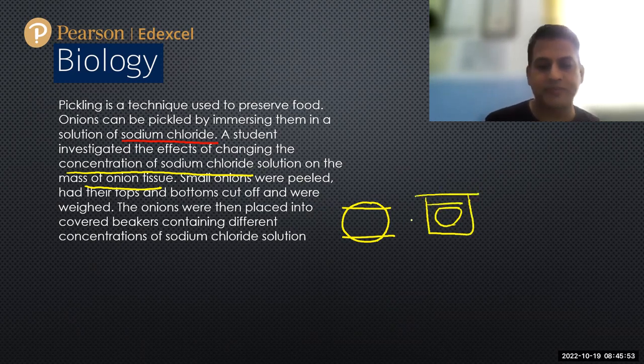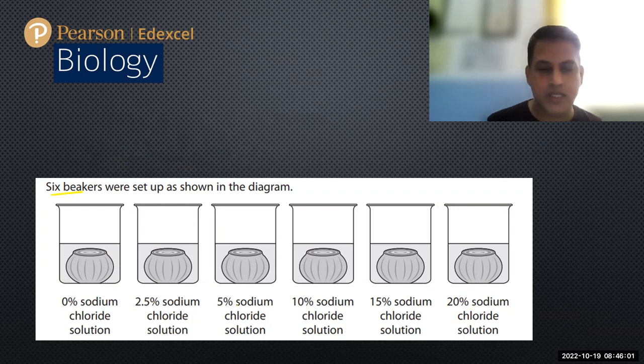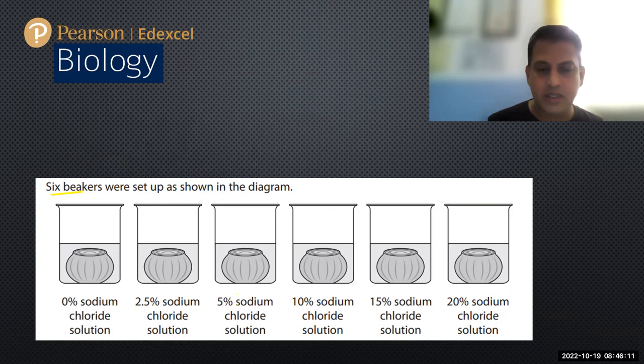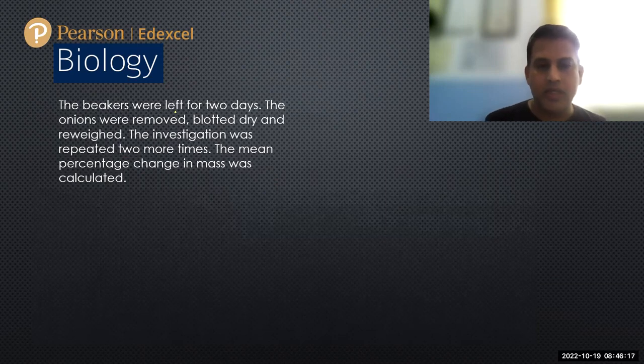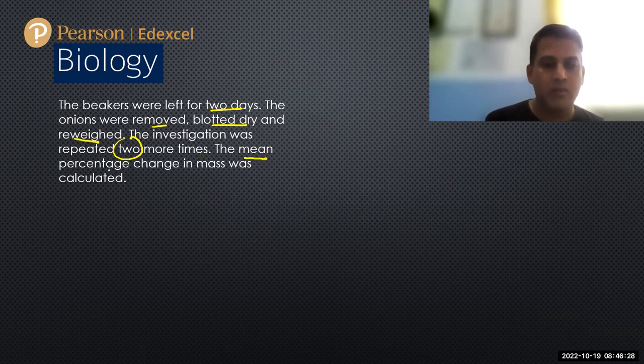Here we can see the concentrations: 2.5%, 5%, 10%, 15%, and 20%. Zero is no sodium chloride, just water as a control. The beakers were left for two days, the onions were removed, blotted dry and reweighed. The investigation was repeated two more times and the mean percentage change in mass was calculated.